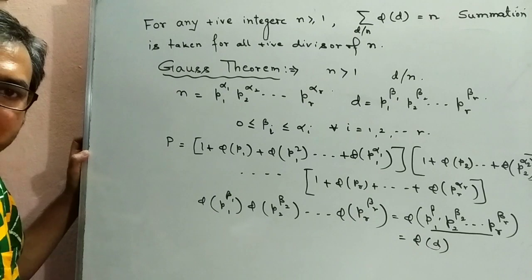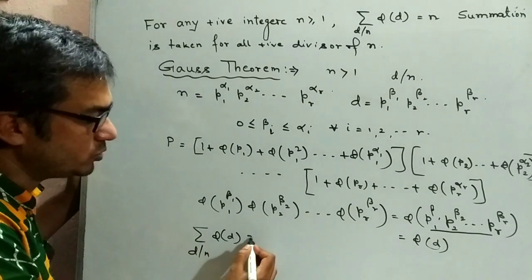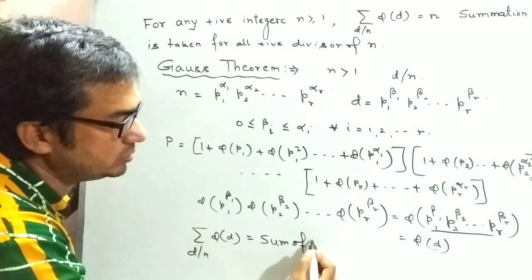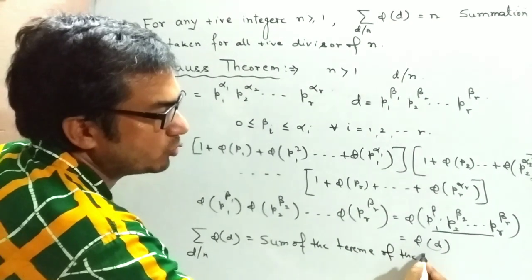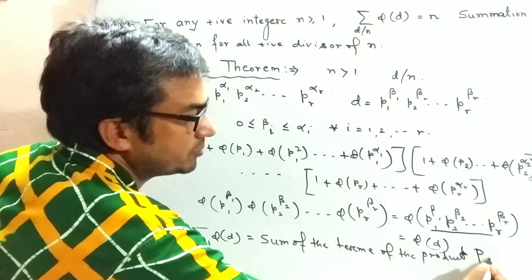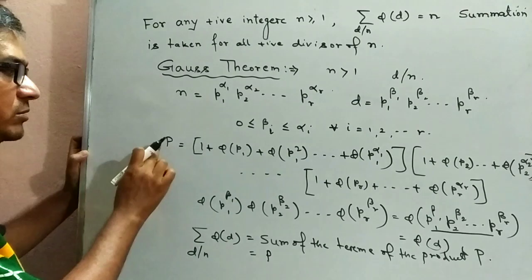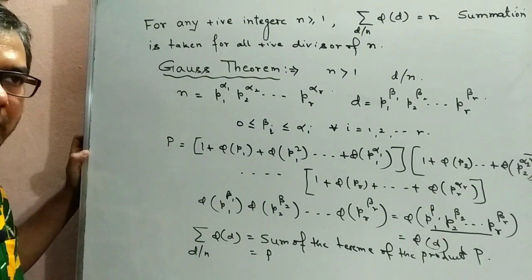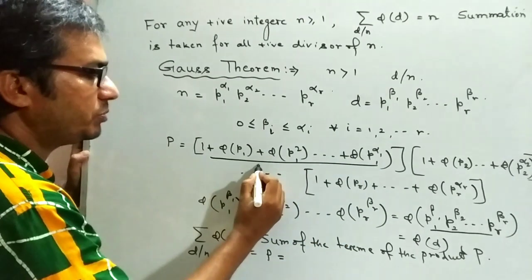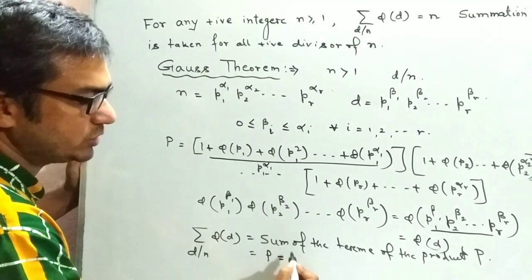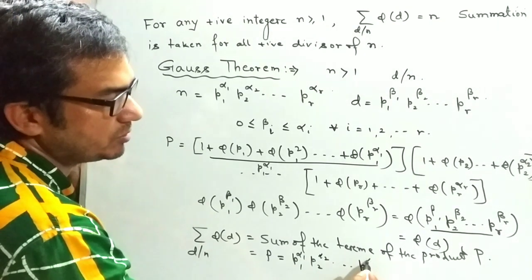Hence we can write: the summation of phi(d) where d divides n is equal to the sum of all terms of the product T, and this equals T itself. And T equals p1^alpha1 · p2^alpha2 · … · pr^alphar, which is n.